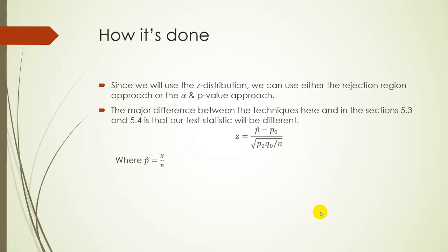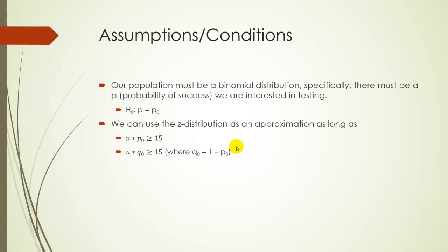If, let's say, P0 was 0.3, Q0 would be 0.7. You need both of these calculations to be at least 15, or this whole Z distribution approximation won't work. So how it's done. Really, you can use either the alpha P value approach, or you can use the rejection region approach. Either one will work. The method is almost identical to what we've been doing when we've been testing the mean, except as we saw, our H0 looks a little different. Instead of mu equaling a number, it's going to be P equals a number.